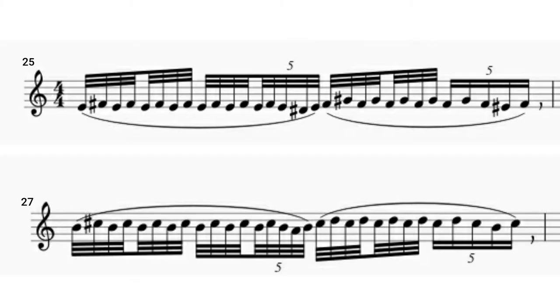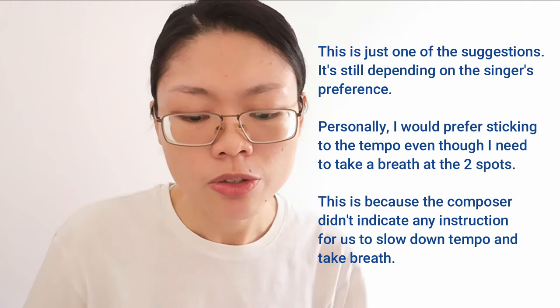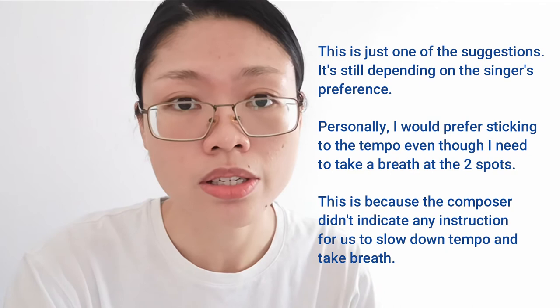But in bar 25 and 27, beat number three with 8 demisemiquavers and beat number four with quintuplet. This is because the composer added two commas here. That means it's a breathing point for us to take a breath. If we make beat number three and beat number four a total of 16 demisemiquavers, then you might not have enough time to catch a breath to continue the next bar. So that's the reason I adjust the note value.